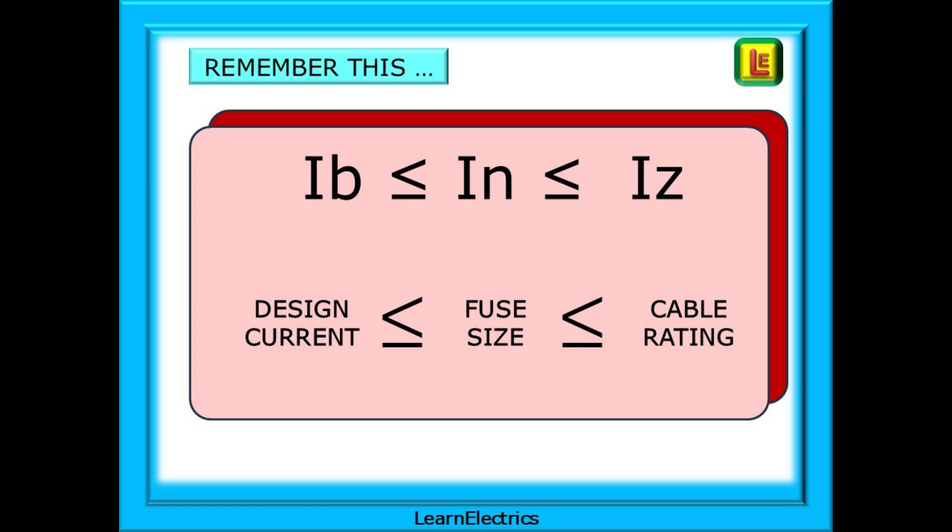Remember this, it matters. The design current must be less than or equal to the fuse or breaker size. And the fuse size or breaker size must be less than or equal to the cable current carrying capacity for the circuit.